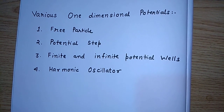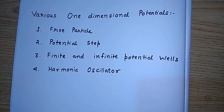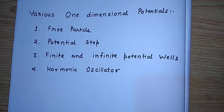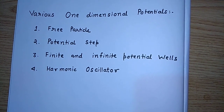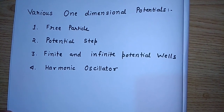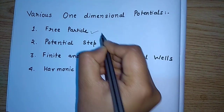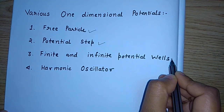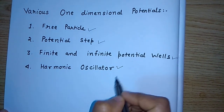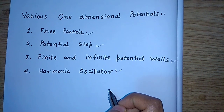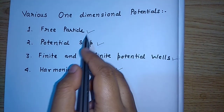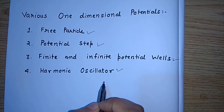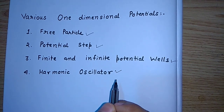Now, the basic one-dimensional potential problems we study in quantum mechanics are: the free particle, potential step, finite and infinite potential well, and the harmonic oscillator. I will discuss each of these potential forms one by one in the next videos.